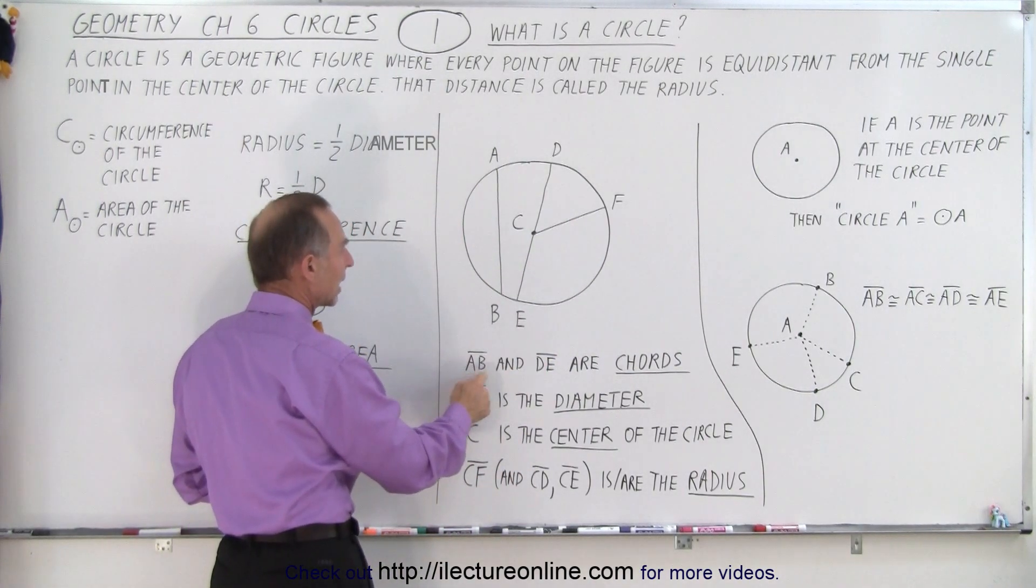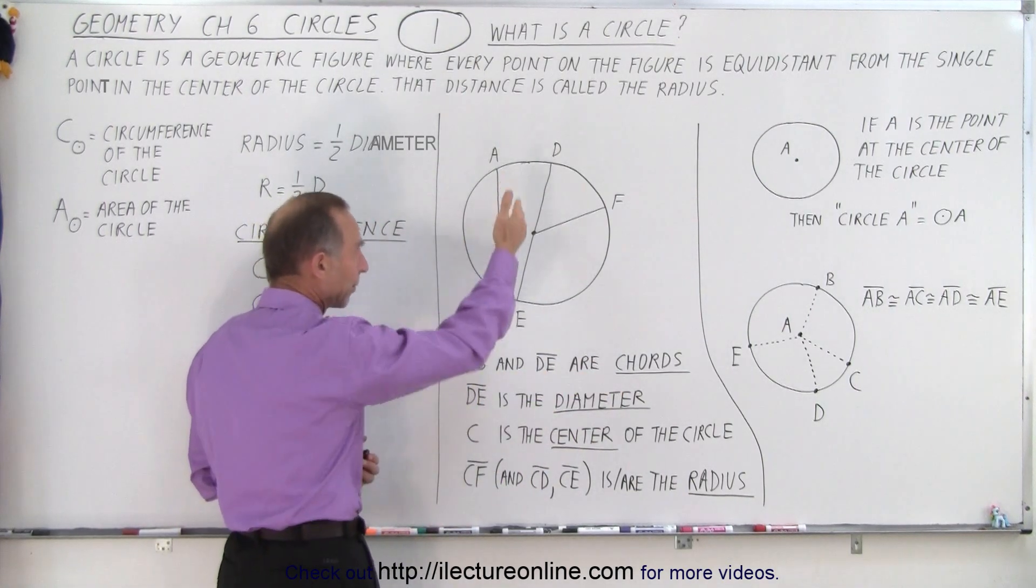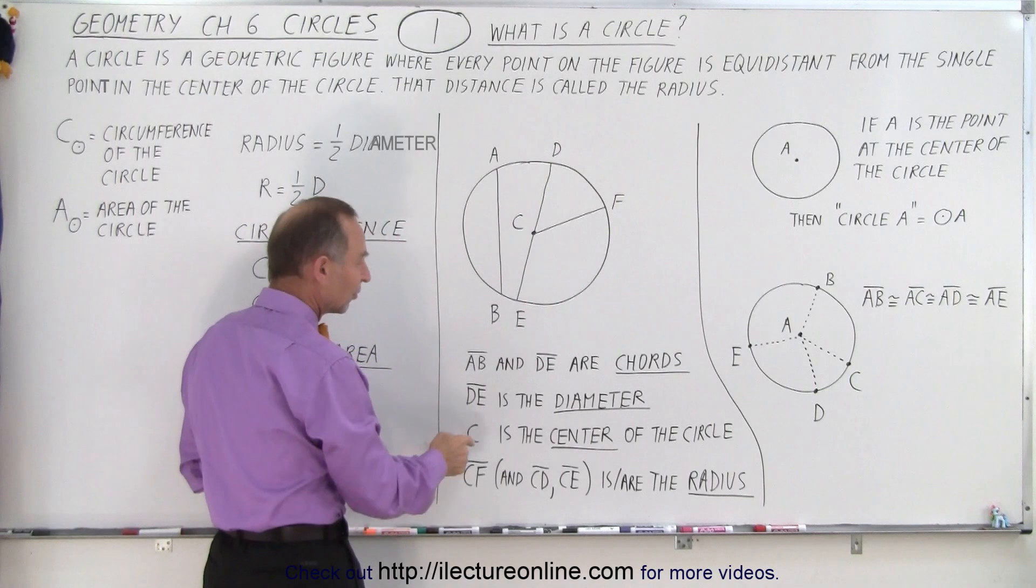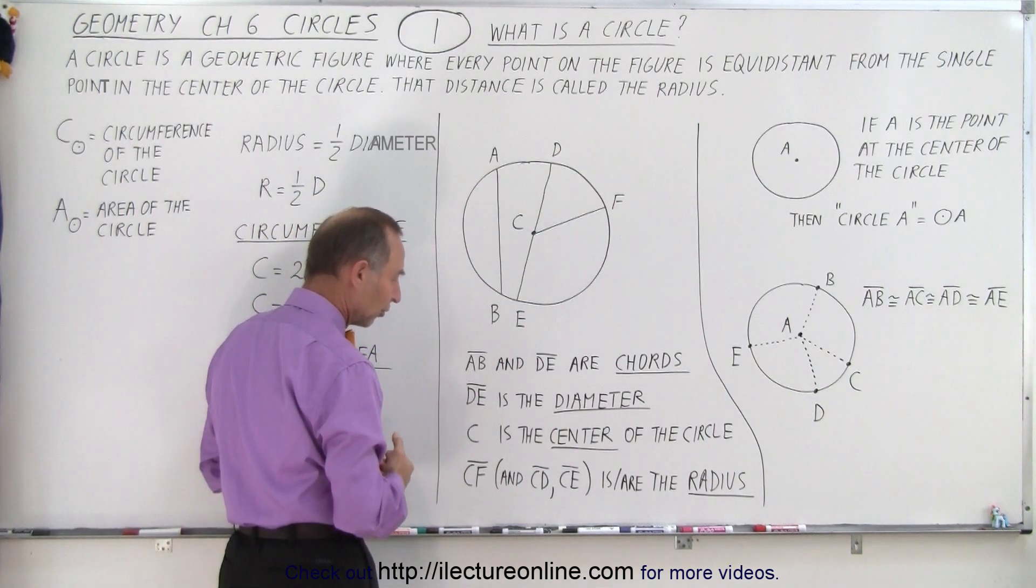Notice that line segment AB and DE are called chords, but DE is also called the diameter because it goes to the center. C is the center point on the circle, so that's called the center of the circle.